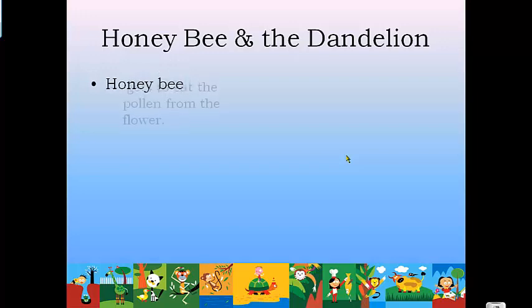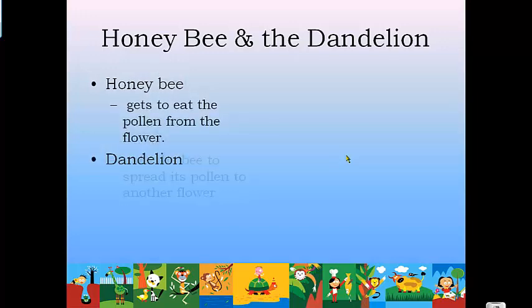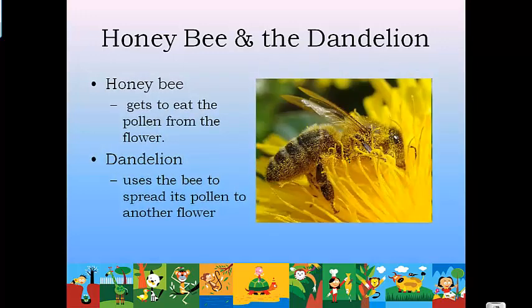The honeybee and the dandelion is another mutualism example. The honeybee collects pollen from the dandelion to make honey. In return, the dandelion uses the bee to spread its pollen and pollinate other flowers. The honeybee benefits because it gets to make honey; the dandelion benefits because its pollen gets spread and fertilizes other flowers. It's a win-win — mutualism.